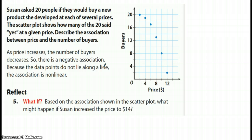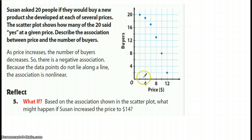So what we have is a set of data. The author says that Susan asked people — she did some type of survey — if they would buy a new product she developed at each of several prices. The scatter plot shows how many of the 20 people said yes at each particular price. So apparently she asked 20 people, and of that 20, so many said yes for a particular price. The price is one particular variable and buyers is the other variable, and of course the buyers will definitely depend on the price.